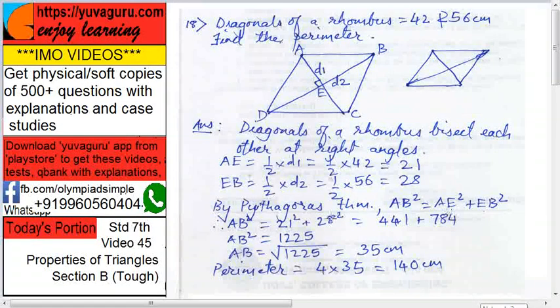21 square is 441, 28 square is 784. Try it yourself, do the squares yourself. Either learn them up to 30 by heart, it's easier then, or you will have to multiply 28 into 28 and then find. So total then it becomes 1225.